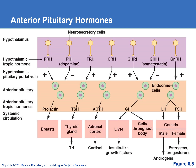Remember that the hypothalamus controls which hormones the anterior pituitary will release or not release. The hypothalamic hormones travel through the portal system to the anterior pituitary, which then tells the anterior pituitary which hormones to release or not release. Here are the targets of the anterior pituitary hormones.